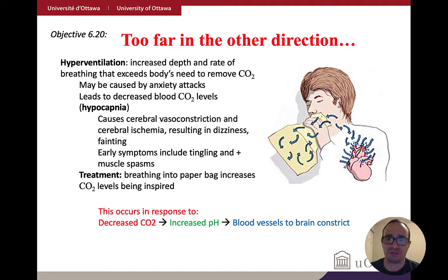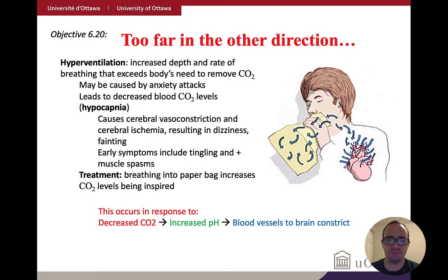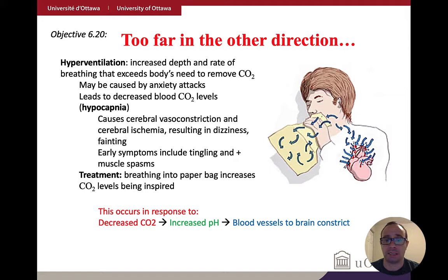You can also go too far in the other direction. Hyperventilation — which can be caused by anxiety attacks — is where you don't have enough CO2 in your system. This can lead to vasoconstriction, resulting in dizziness and muscle spasms. The classic remedy is to breathe into a paper bag. Hyperventilation is actually all about carbon dioxide, not oxygen. With less carbon dioxide, your pH is not regulated properly.